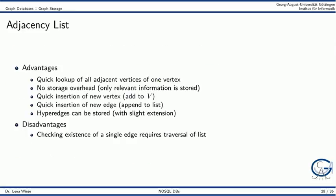The adjacency list has several advantages. We can quickly look up all adjacent vertices of one vertex by outputting its adjacency list. There is no storage overhead — only relevant information is stored, meaning an edge is only represented if it exists. We can also quickly insert a new vertex by adding it to the vertex set, and quickly insert a new edge by appending it to the appropriate adjacency lists. Hyperedges can also be stored with a slight extension. One disadvantage is that checking for the existence of a single edge requires traversing the entire adjacency list.